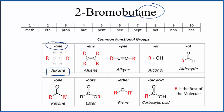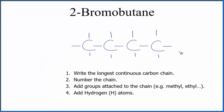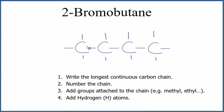The 'bute' right here means we have four. So for butane, we have four carbon atoms and they're all single-bonded. Let's put that up there — we have our four carbon atoms single-bonded. That's the butane.